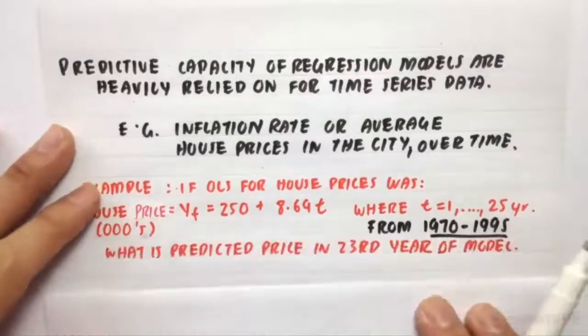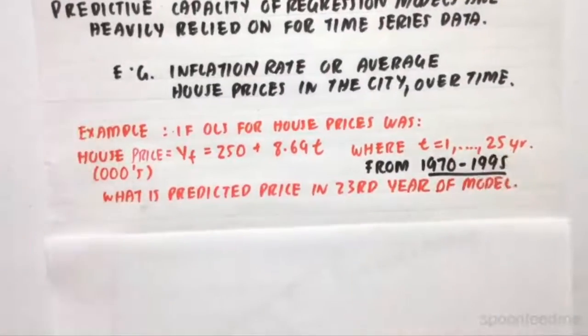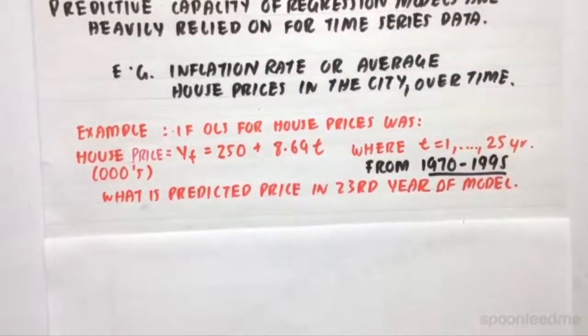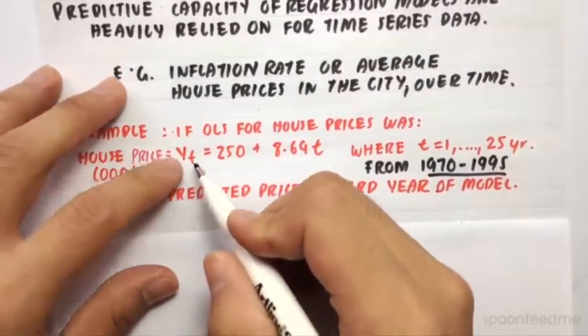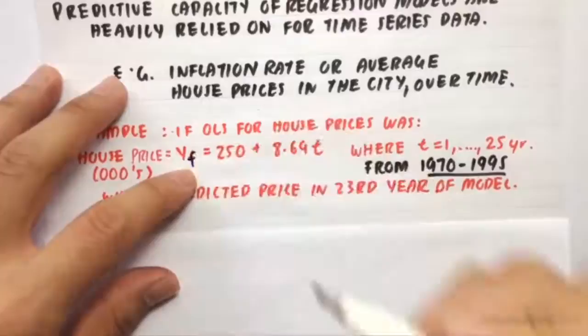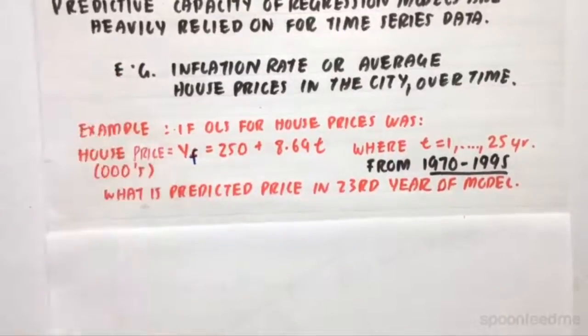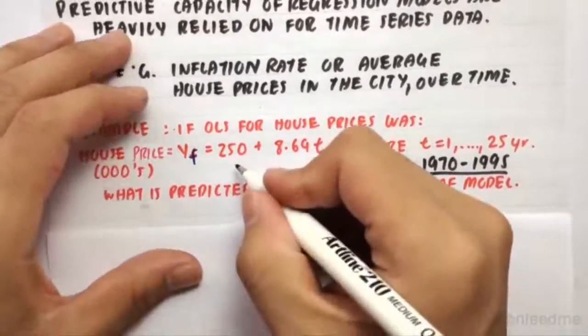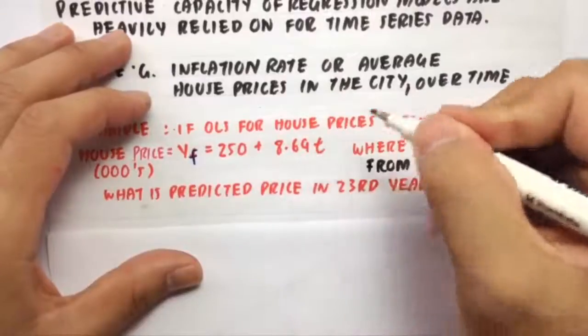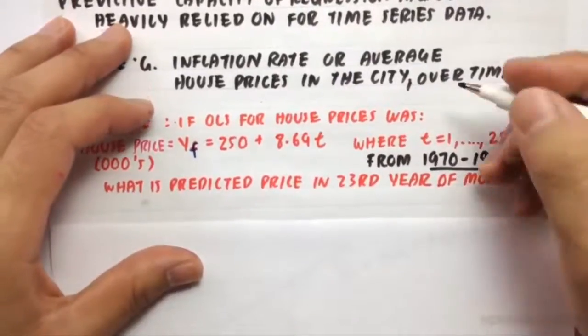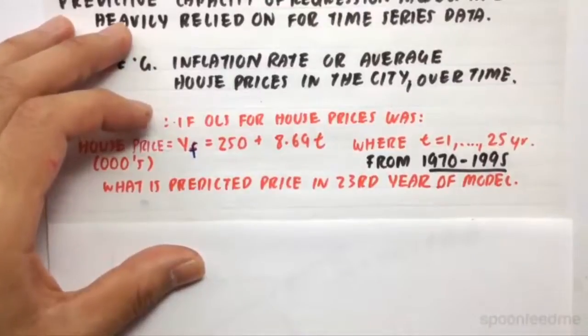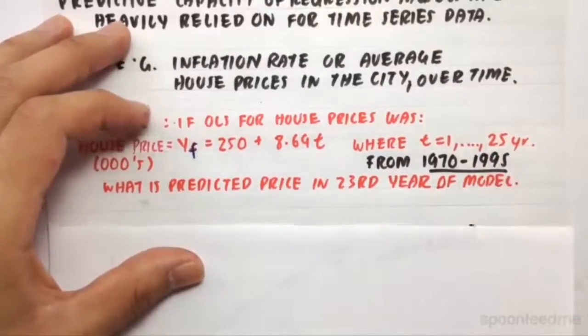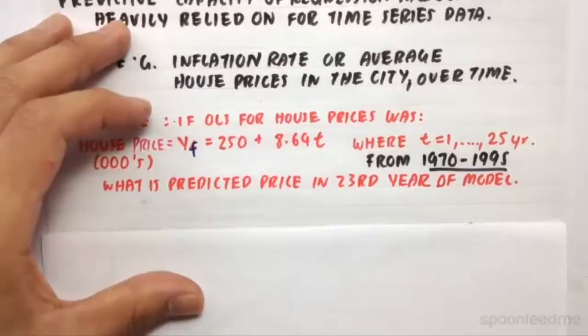So an example is, if OLS for house prices was the house price equals YF, which is the Y variable forecast, the forecast of the Y variable, equals 250 plus 8.94T, where T equals from 1 to 25 years. And this report is from 1970 to 1995. So what is the predicted price in the 23rd year of the model?